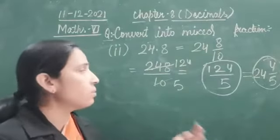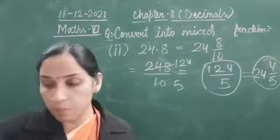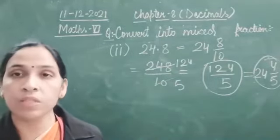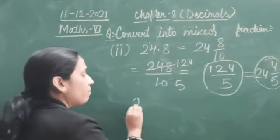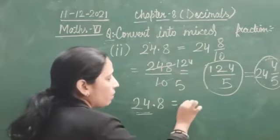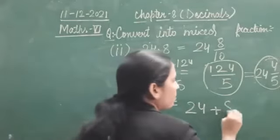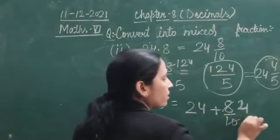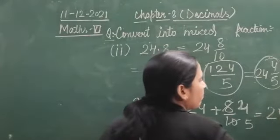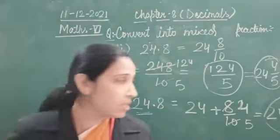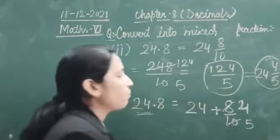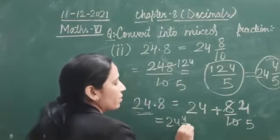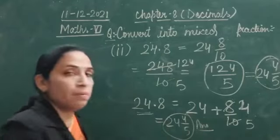So how to convert a decimal number into mixed fraction is clear. One more easy way: 24 is the whole number part, write it down, and now this will be 8 by 10. Reduce it: 4 twos are 8, 2 fives are 10 — or we can write it as 24 and 4 by 5. This is yet another way to do such a question.